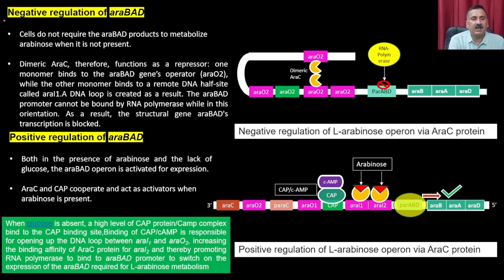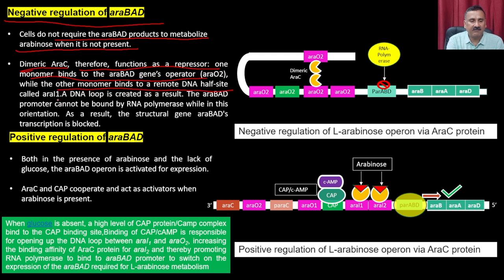For negative regulation of araBAD: cells do not require araBAD products when arabinose is absent. In the absence of arabinose, dimeric araC functions as a repressor. One monomer binds to the arabinose gene operator while the other monomer binds to a remote DNA half-site called araO, creating a DNA loop. While in this orientation, RNA polymerase cannot bind to the araBAD promoter, and transcription is blocked.